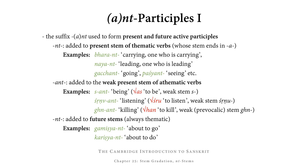Ant, on the other hand, is added to the weak stem of athematic verbs to form the present active participle. From as, the weak stem is s; add ant, and we get the present active participle sant ('being'). From śru ('to listen'), the weak stem is śru; add ant, and you get śṛṇvant through internal sandhi — so not śru-n-ant but śṛṇvant, meaning 'listening.' From han ('to kill'), we take the weak stem in its pre-vocalic form ghn; add ant, and that gives us the present active participle ghnant, meaning 'killing.'